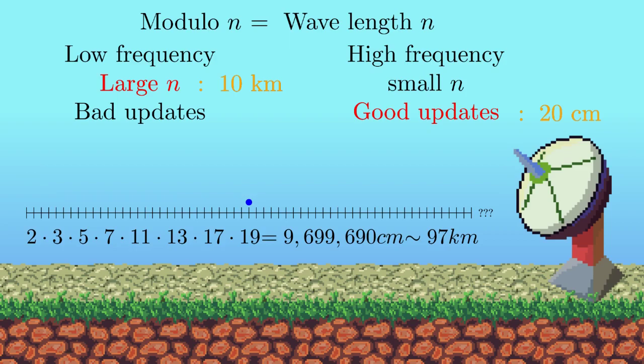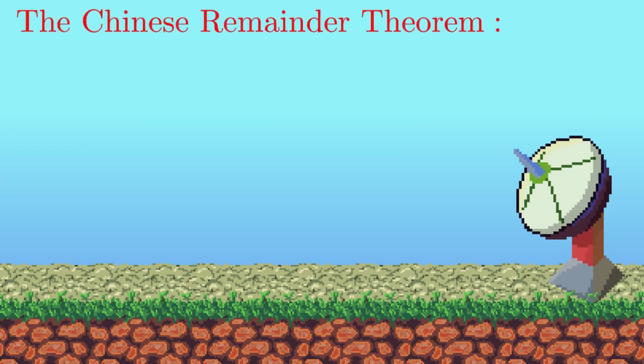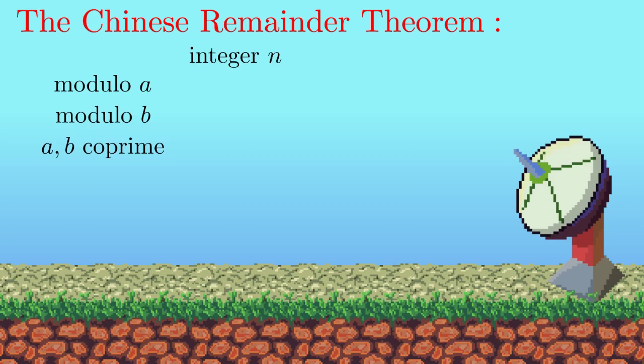The phenomenon that we saw here uses one of the most basic theorems in number theory, called the Chinese Remainder Theorem. This theorem in its basic form states that if there is an integer n which we know modulo a and modulo b, and if additionally a and b are co-prime, then we can also know what n is modulo the product a times b.